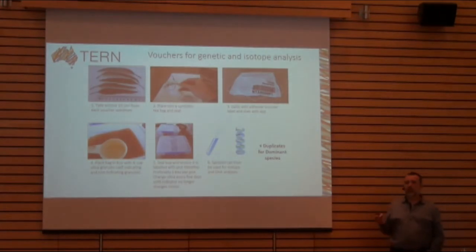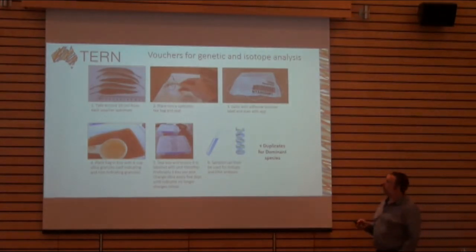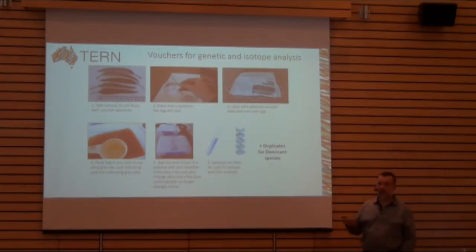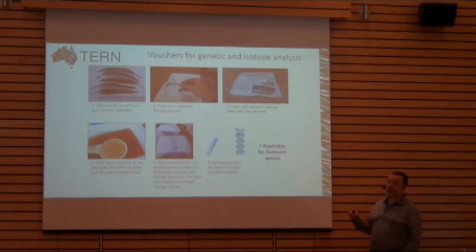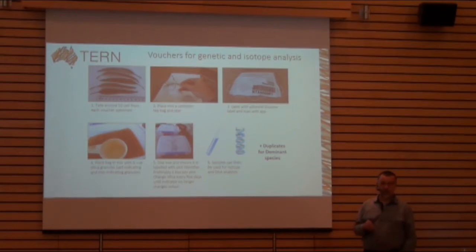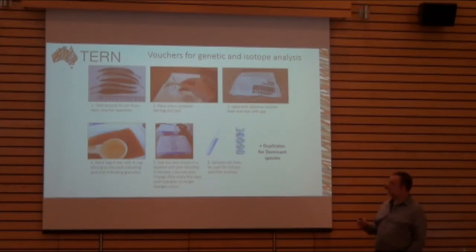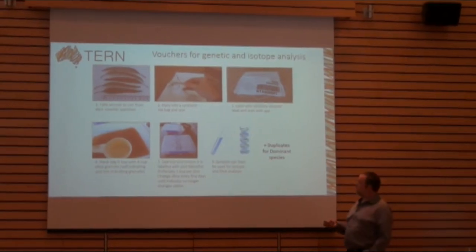We take samples for genetic analysis as well. A small amount of material is put into a synthetic tea bag with no DNA signature and barcoded, tied to the actual voucher. Subsequent samples — another four if it's a dominant species — come from different individuals across the plot, which allows for a whole range of DNA genetic analysis and isotope analyses as well.